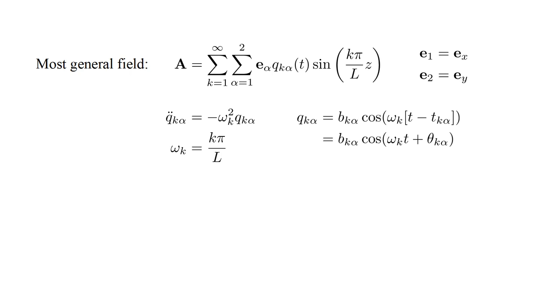The solution is q_{k,α} = b_{k,α} cos[ω_k(t - t_{k,α})]. We can alternately express the cosine argument as ω_k t + θ_{k,α}, with θ_{k,α} = -ω_k t_{k,α}.